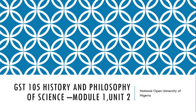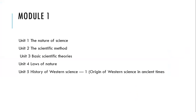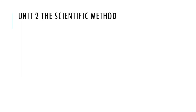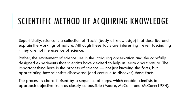Welcome to the online class. This is GST 105, History and Philosophy of Science, Module 1, Unit 2 for the National Open University of Nigerian students. We looked at Module 1, Unit 1 in the previous class, and so in this class we'll be looking at Unit 2. We have five units in Module 1. We'll be looking at scientific method of acquiring knowledge in this session.